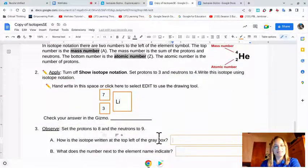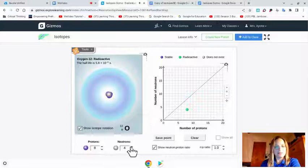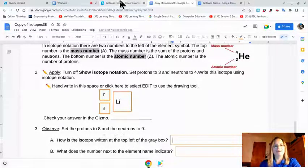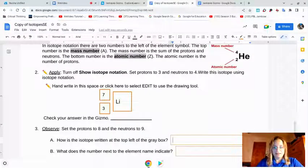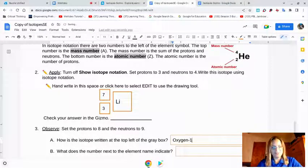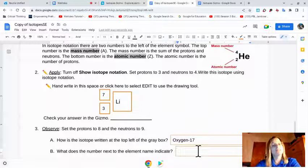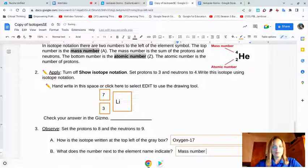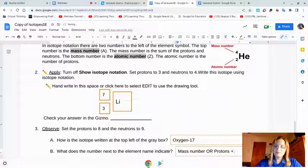Set protons to 8 and neutrons to 9. So protons to 8, neutrons to 9. And what's it say? How is the isotope written at the top left of the gray box? Top left. Oxygen-17. Oxygen dash 17. What does the number next to the element name indicate? Now we did just go over this on the notes. You guys know this. Right. The mass number or protons plus neutrons.